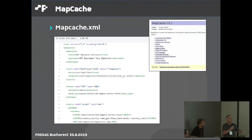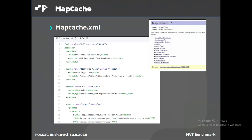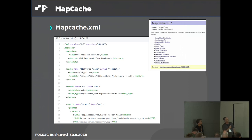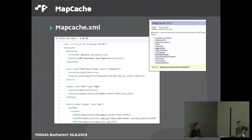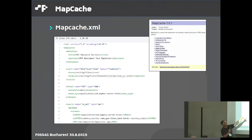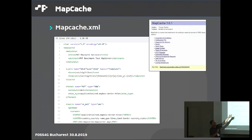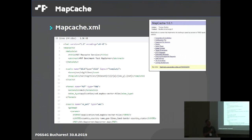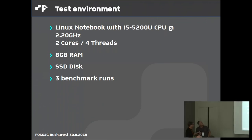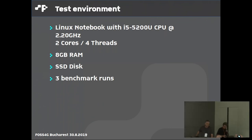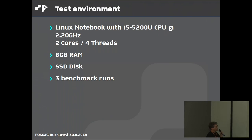We need a map file to configure the output of MapServer and also a caching engine, so we used MapCache, which is part of the MapServer suite. To configure it there is an XML file — we used version 1.6, though a new version 1.8 is available. This is an effort by Thomas Bonfort and is basically an Apache module. We started with a modest testing environment: my notebook with two cores and four threads, 8 GB RAM, and an SSD disk, and we did three benchmark runs.